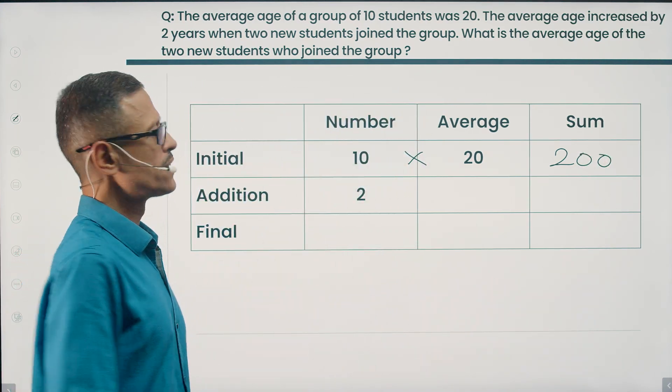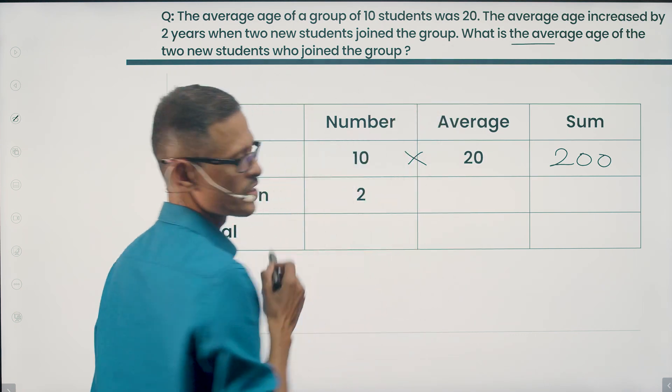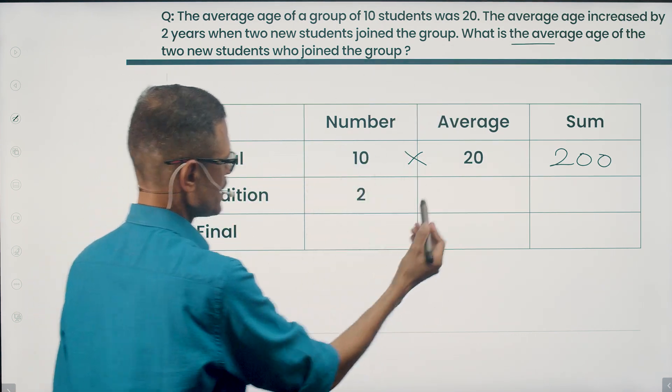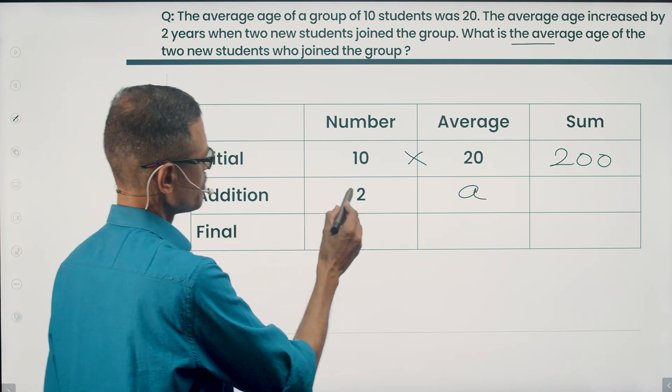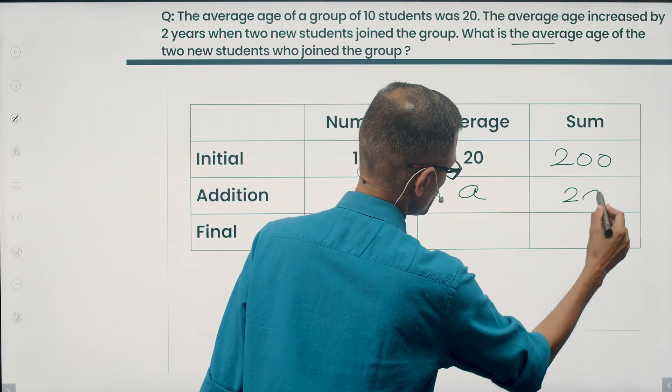Two new students join. The question is asking us to find out the average age of those students. Let's assign a variable because we do not know that. Let's take it to be an a. So sum of their ages is the number times average which is equal to 2a.